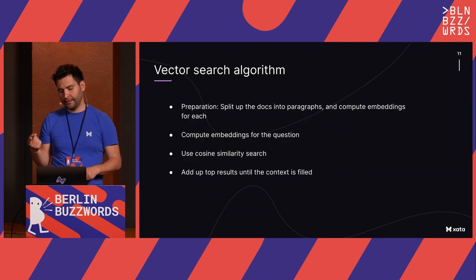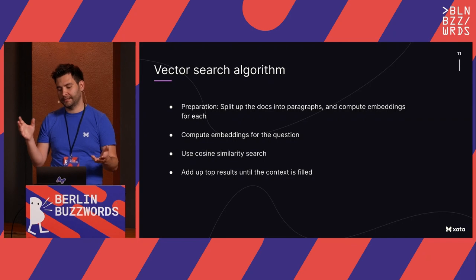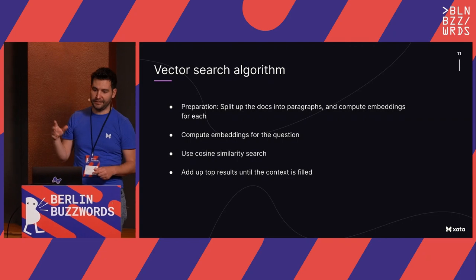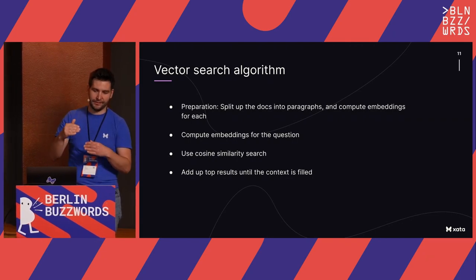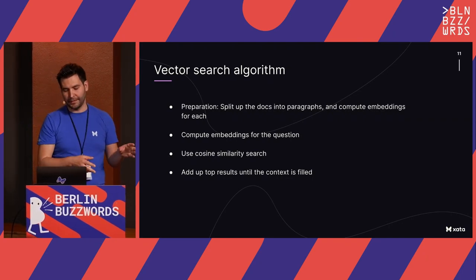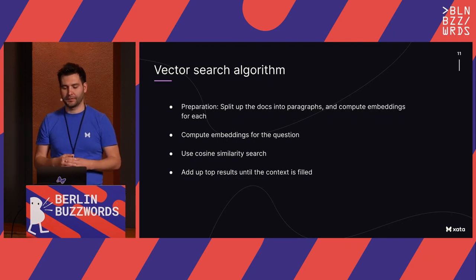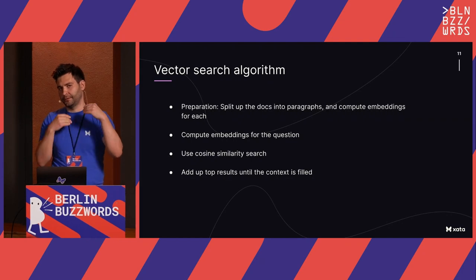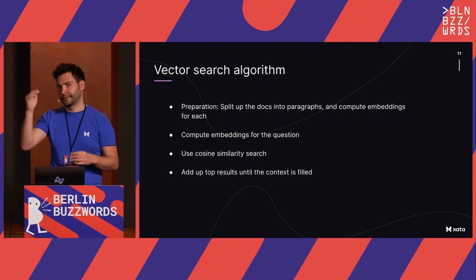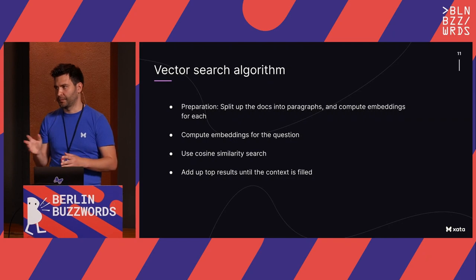With vector search, it takes a little more preparation because you need to split your docs into paragraphs — at least this is what OpenAI recommends, at the paragraph level. You create embeddings at the paragraph level, put them in a vector database, and do cosine similarity search. Then you embed the question, do the similarity search, take the top results until the context is filled, and pass that to ChatGPT.